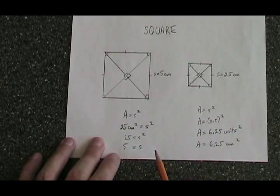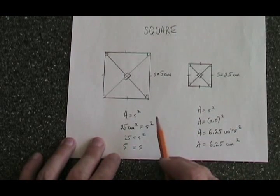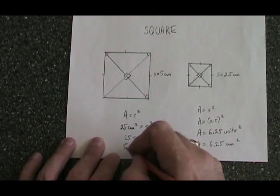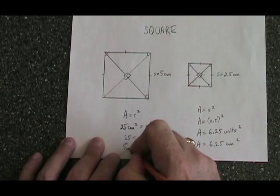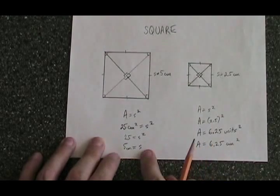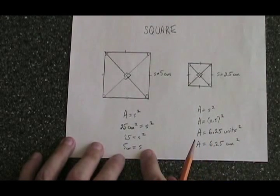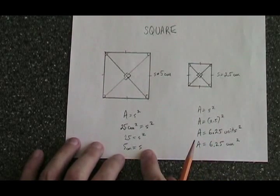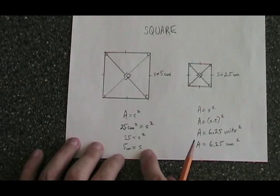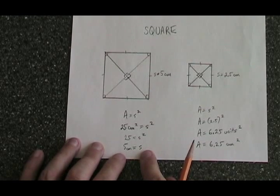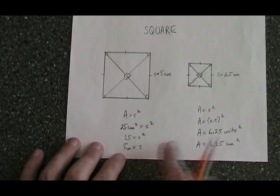The unit of area was centimeters squared, so the unit of length for this square is centimeters. We have just proven that this square's area is 25 centimeters squared, and that means its side length has to be 5 centimeters.